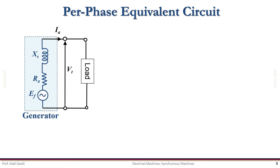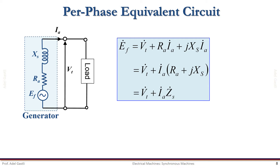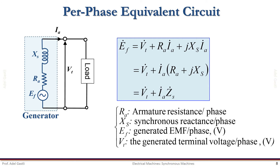So the per phase equivalent circuit of the cylindrical synchronous generator can be represented as shown here. The voltage equations are developed here based on KVL. RA designates the armature resistance per phase, XS designates the synchronous reactance per phase, EF designates the generated EMF per phase, VT designates the terminal voltage per phase, and IA is the armature current per phase. To find the actual three phase values of the voltages and currents, we need to consider the type of winding connection in star or delta depending on the case.